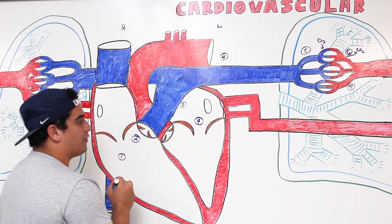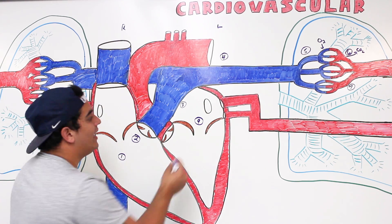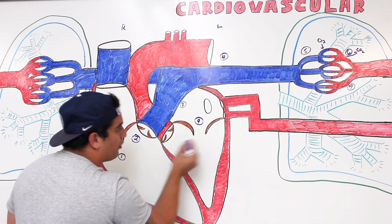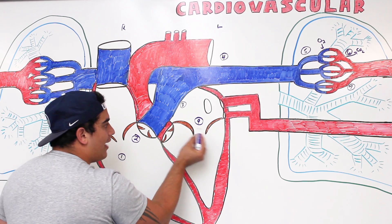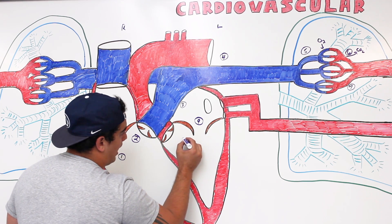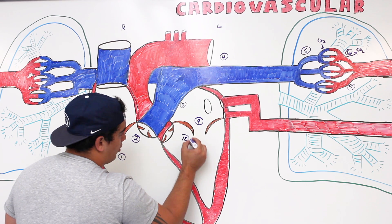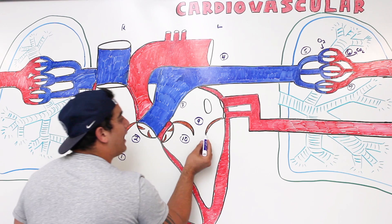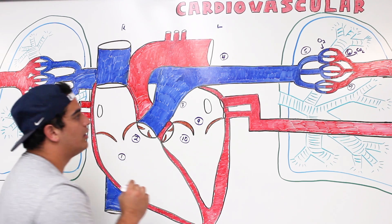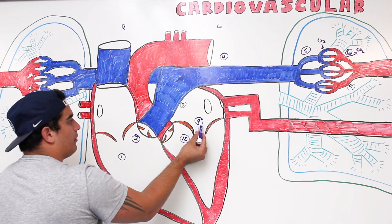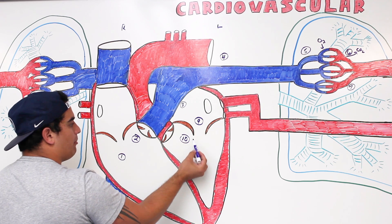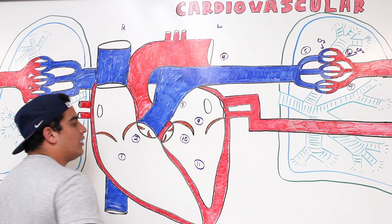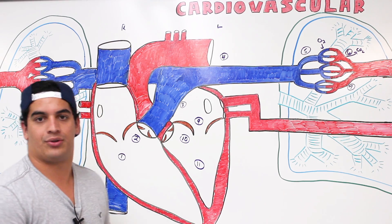The pulmonary veins deliver blood to the left atrium. From the left atrium, the blood is pumped down through the valves on the left side of the heart, which has two names: the bicuspid valve or the mitral valve. The left atrium pumps blood through the mitral valve and into the left ventricle.